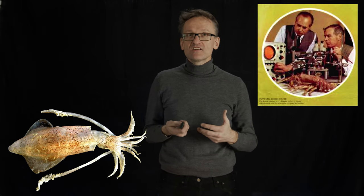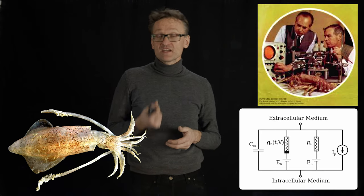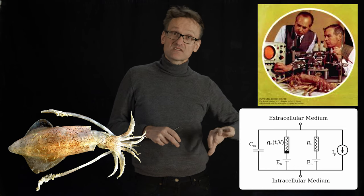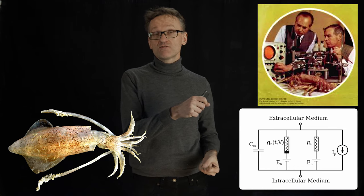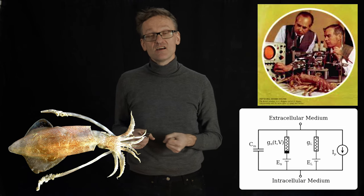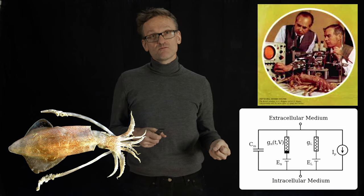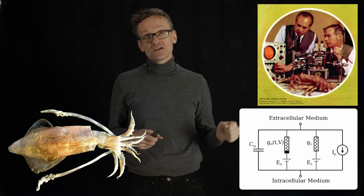But they persisted and came up with some very simple formulations, literally using idealized electrical circuits to describe how the flux of ions in and out of a cell could be explained with different types of resistors and condensers.